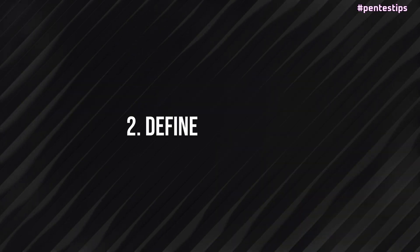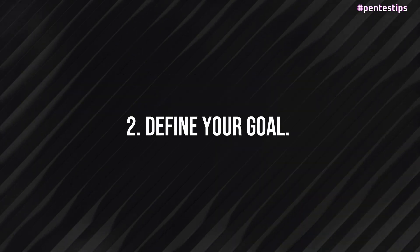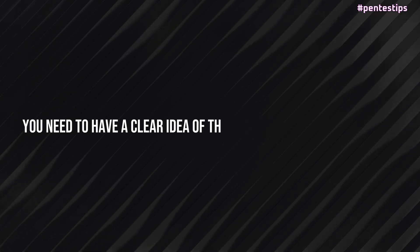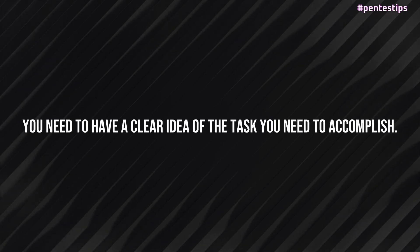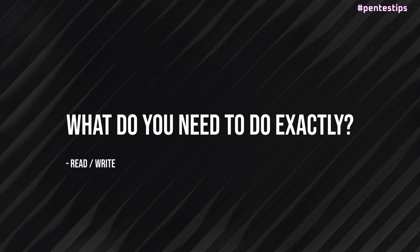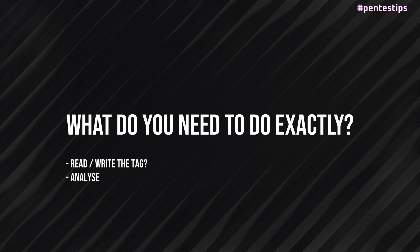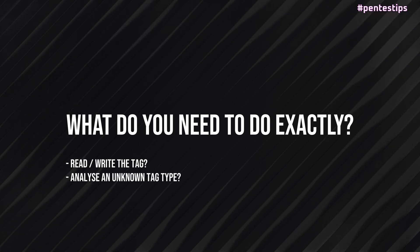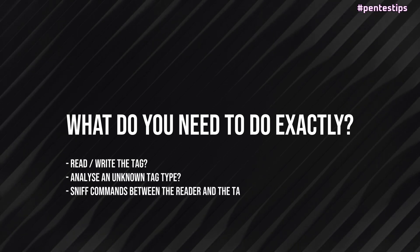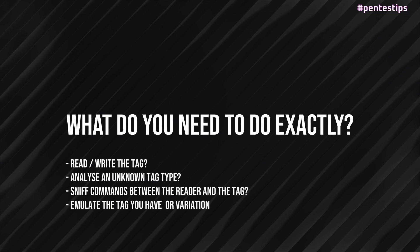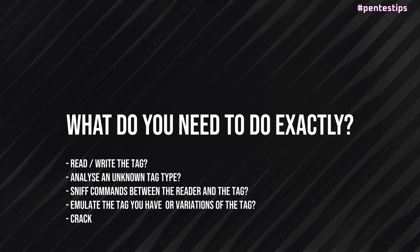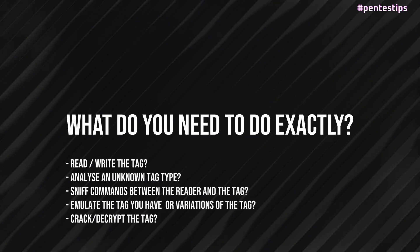The second step is to define your goal. You need to have a clear idea of the task that you need to accomplish. So what do you need to do exactly? Read and write the tag, analyze an unknown tag type, sniff communications between the reader and the tag, emulate the tag you have or variations of this tag, crack or decrypt the tag.